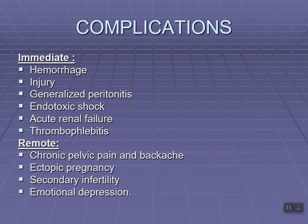Complications of septic abortion are divided into immediate and remote. Immediate complications include hemorrhage, injury to the pelvic organs or adjacent structures, generalized peritonitis, endotoxic shock due to continuous blood and fluid loss, acute renal failure, and thrombophlebitis. Remote complications occurring after a certain period include chronic pelvic pain with backache, ectopic pregnancy in the next pregnancy, secondary infertility — difficulty in subsequent conception — and emotional depression.